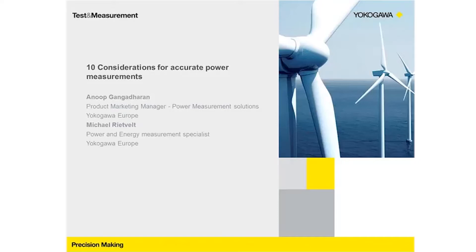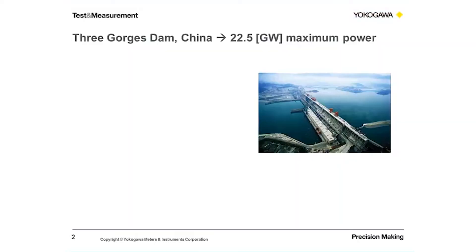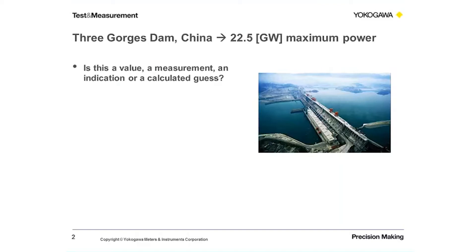Let's start with the basics — what makes a good measurement? A good measurement is done not only by performing observations with the measurement instrument. To explain it with a small example: I like to use the Three Gorges Dam in China, which is everything but small, and which claims to be capable of generating 22.5 gigawatt maximum power. This looks like an observation — but do you think this is a measurement, an indication, or just a guess?